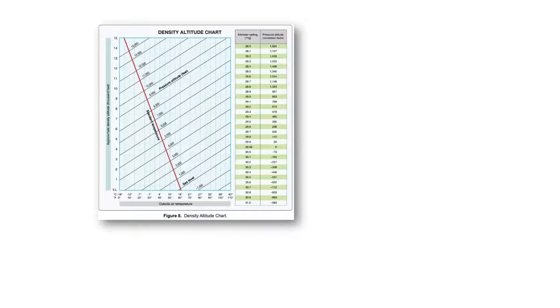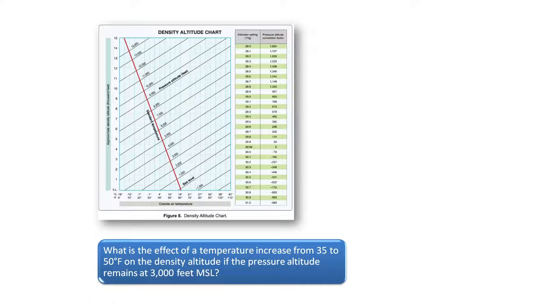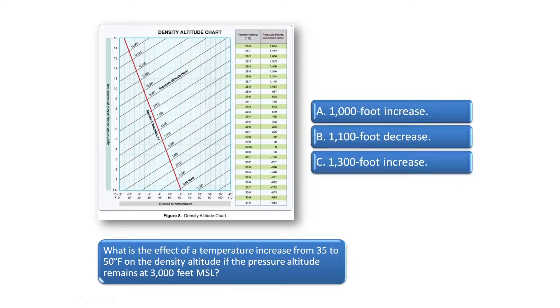Refer to the density altitude chart in the top left of the screen. What is the effect of a temperature increase from 35 to 50 degrees Fahrenheit on the density altitude if the pressure altitude remains at 3000 feet MSL?